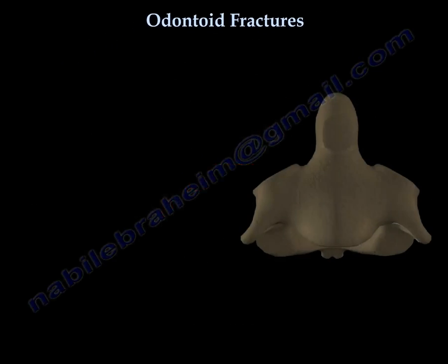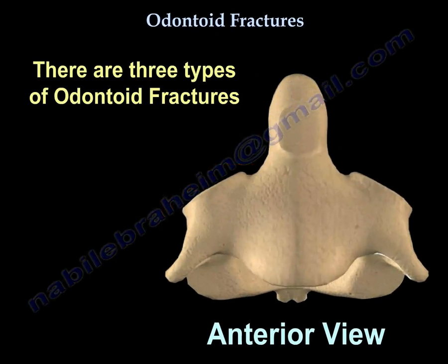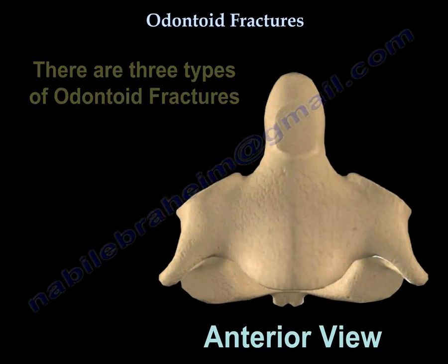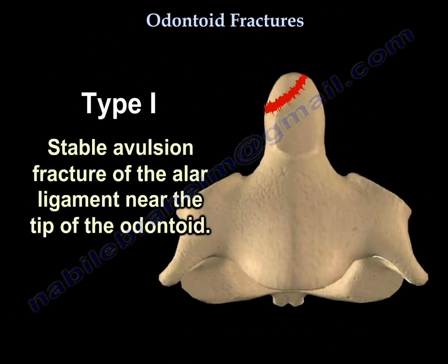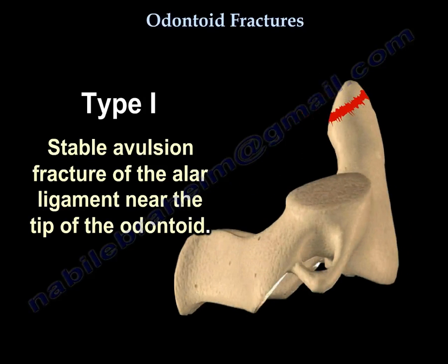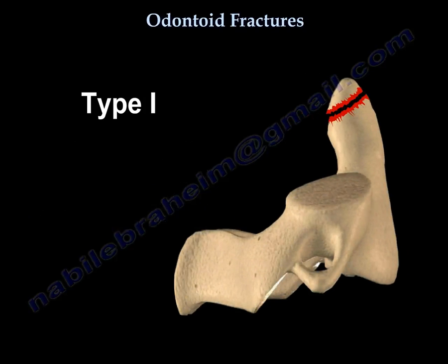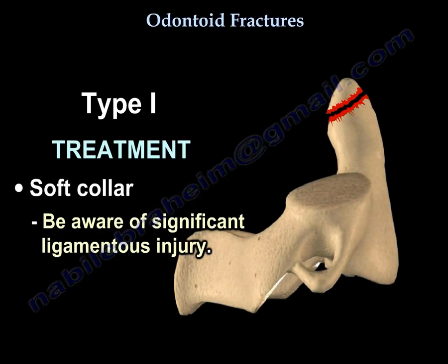There are basically 3 types. Type 1 is a stable avulsion fracture of the alar ligament near the tip of the odontoid. Treatment is a soft collar. Be aware of significant ligamentous injury.